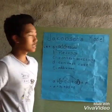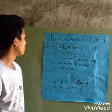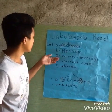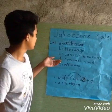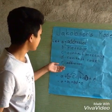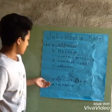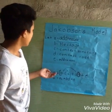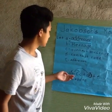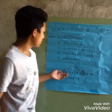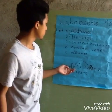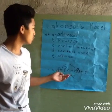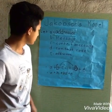Now discussing Jakobson's model in equation form. A is the addresser, B is the message, C is the context message, D is the contact code, and E is the addressee. Here is the example: A the addresser plus B the message will distribute to C the context message plus D the contact code, and we also have an addressee.